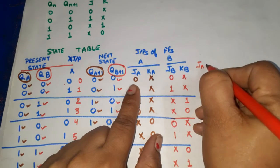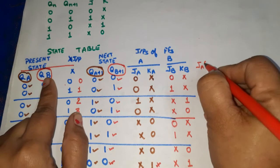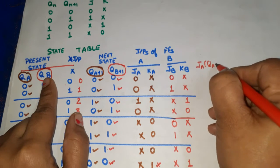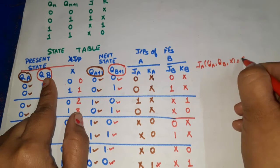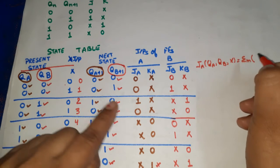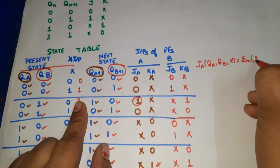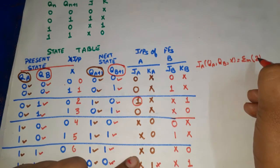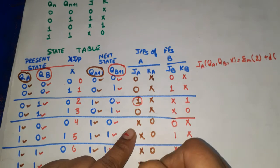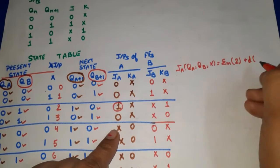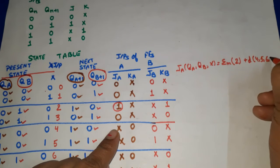JA, KA, JB, KB are all functions of the three input variables QA, QB, and X. For JA: sum of minterms where value is 1 is minterm 2, plus don't cares at 4, 5, 6, 7. For KA: sum of minterms where value is 1 is minterm 7, plus don't cares at 0, 1, 2, 3.